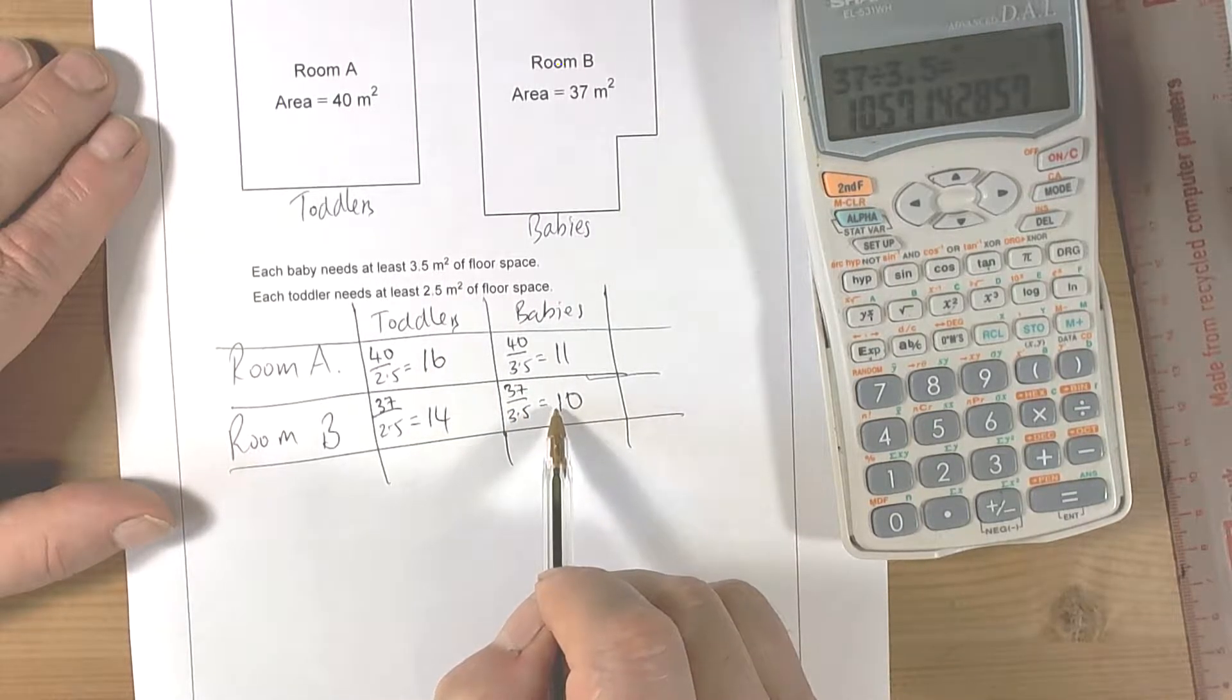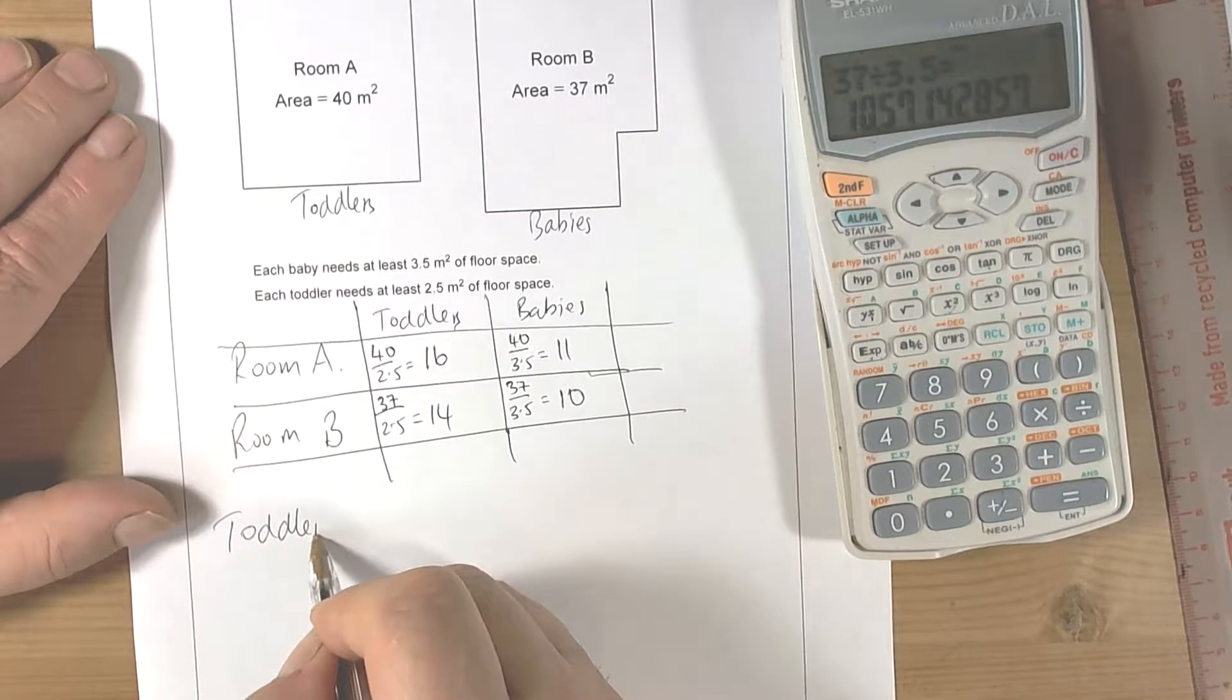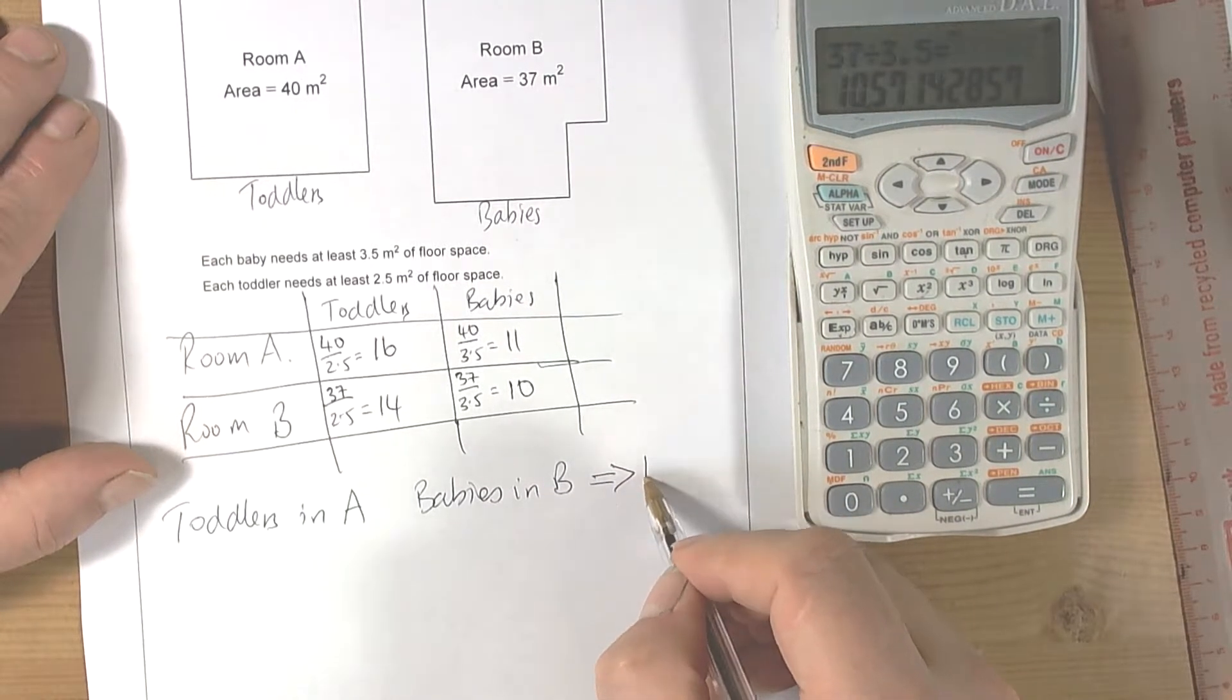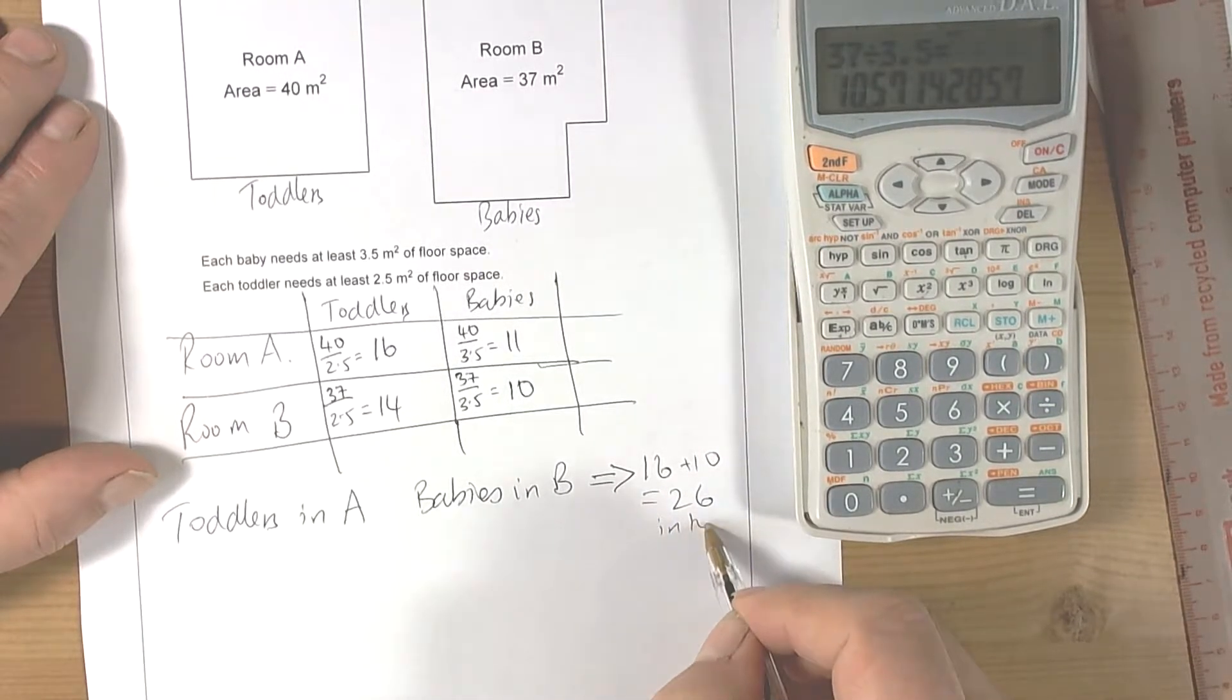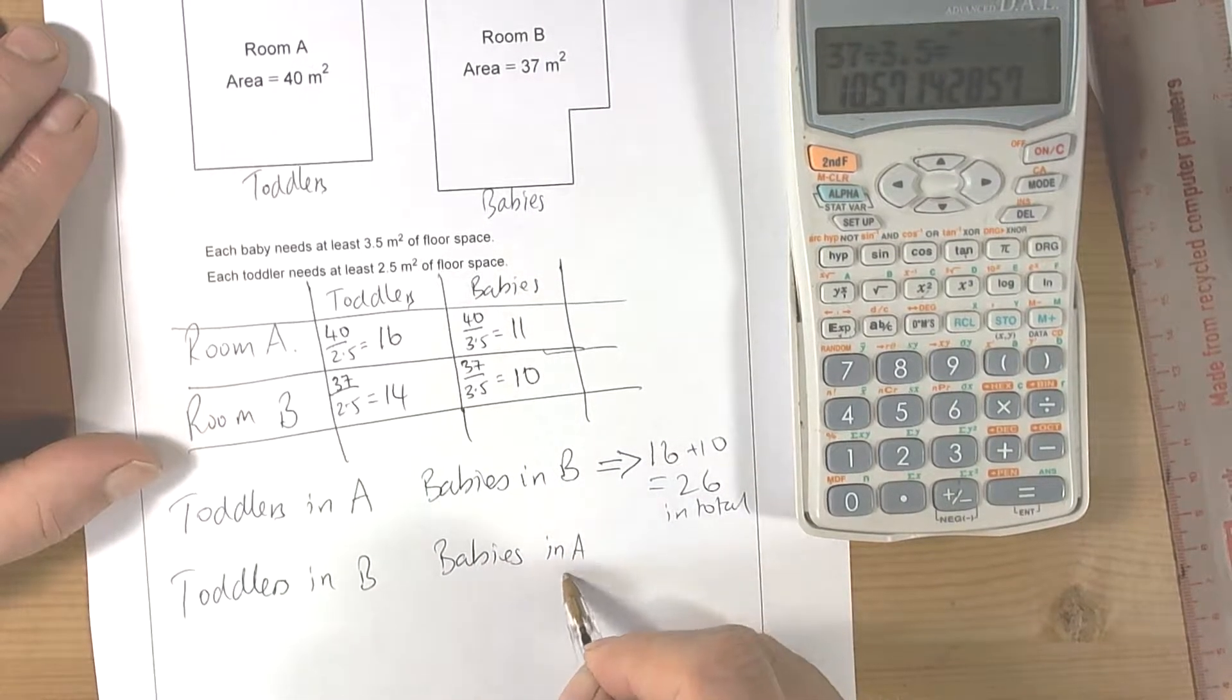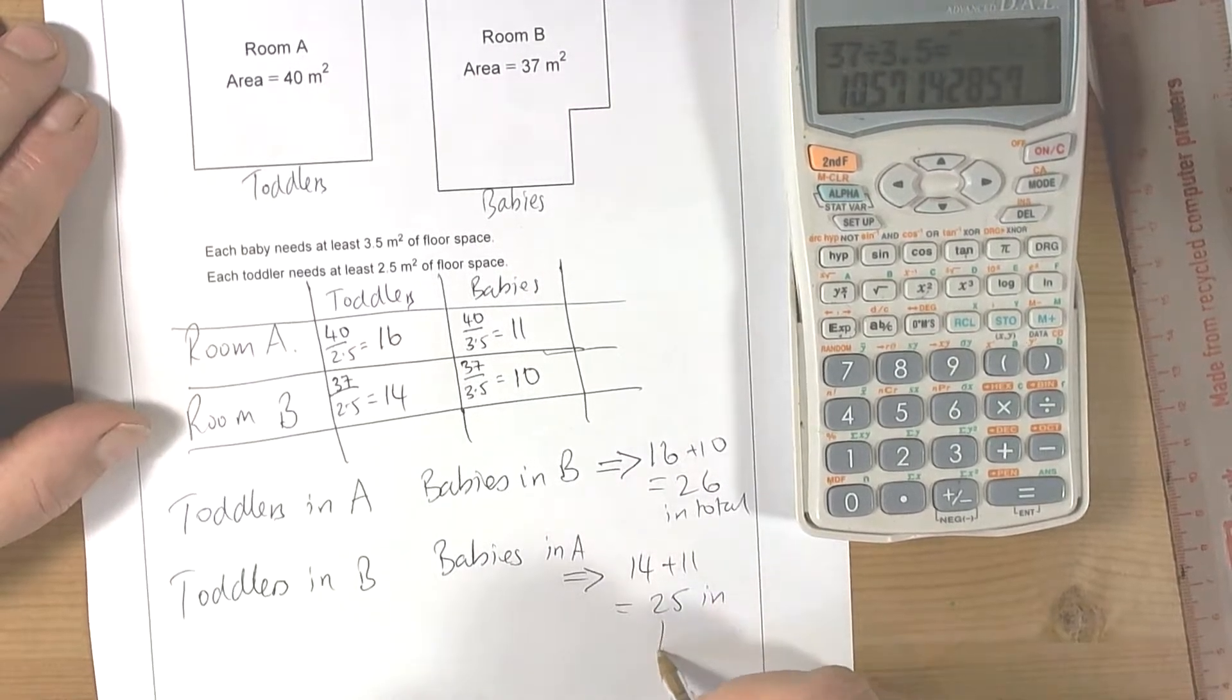So toddlers in A, babies in B - toddlers in A is 16, babies in B is 10. If we do babies in A and toddlers in B, we get 14 toddlers and 11 babies, so that's 25 in total.